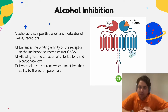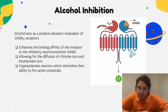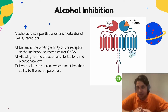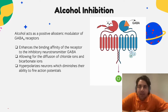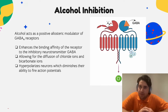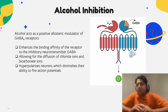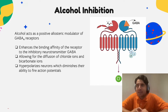GABA-A acts as the main inhibitory neurotransmitter in the central nervous system. It works by hyperpolarizing the neuron — making the charges inside the neuron more negative compared to the outside — by allowing negatively charged ions such as bicarbonate and chloride ions to diffuse inside the cell. This diminishes the neuron's ability to fire action potentials, which means alcohol depresses the nervous system and makes it harder for the brain to launch new action potentials.